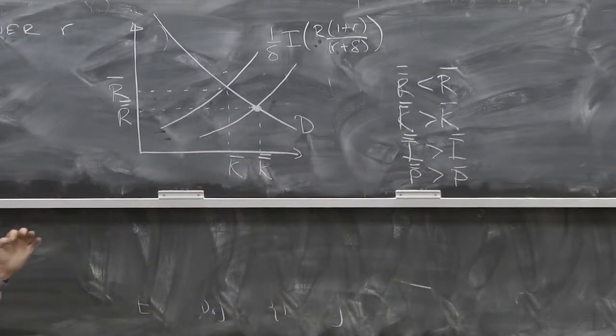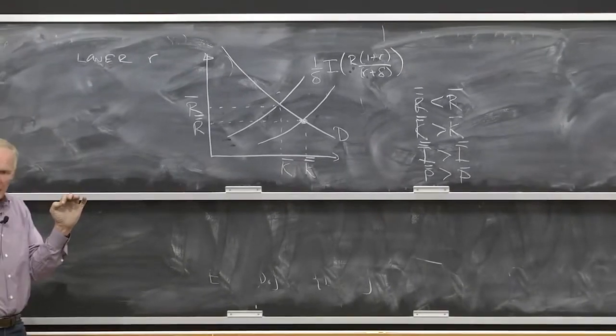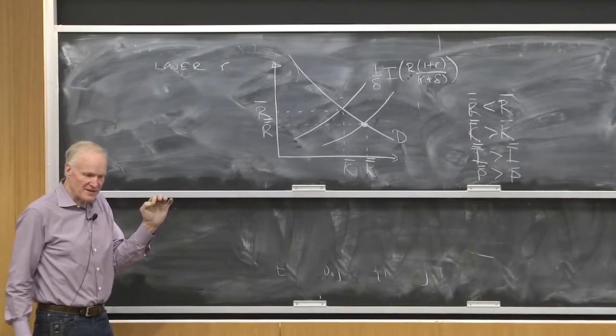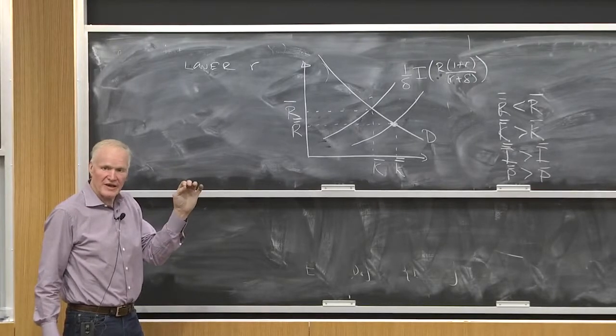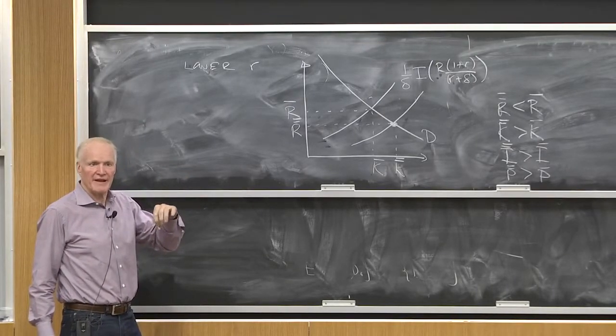That is, a lower interest rate kind of looks like this boom period too, right? Because a lower interest rate basically raises the price that the sellers get but lowers the monthly cost of living in the house.